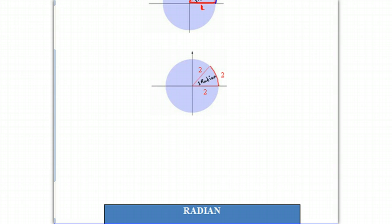Let's look at a second example. Once again, we have an angle in standard position, but this time the radius is 2. And let's say that it intercepts an arc on the circle that is equal to length 2 — maybe 2 inches, 2 centimeters, or whatever it happens to be. Therefore, that angle is also 1 radian. Notice that the radius doesn't have to be equal to 1 — it could be 2, it could be 10, or whatever. But if the length of the intercepted arc is equal to the length of the radius, then that is considered to be 1 radian.